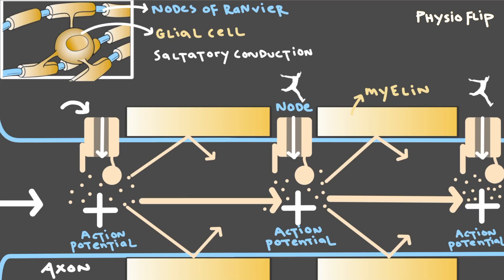And saltatory conduction is actually pretty awesome, because not only does it help speed up the electrical signals. Since now the electrical signals are jumping from node to node much more quickly, it also means that we save energy. Action potentials require a lot of metabolic energy. The fewer action potentials we have to generate, the more energy we'll save. That's pretty cool, right?